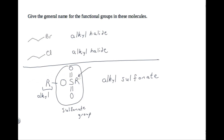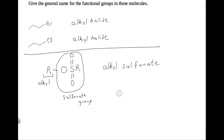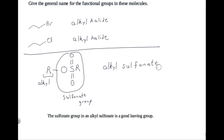Notice that we're not using the term alkyl for the carbon chain that is part of the sulfonate group. We're using the term alkyl for the carbon chain that is attached to the sulfonate group but not part of it. That's where we get the term alkyl sulfonate. We're interested in alkyl sulfonates because sulfonate groups are good leaving groups.